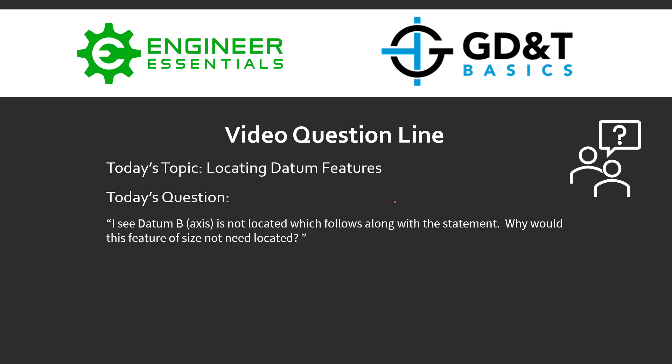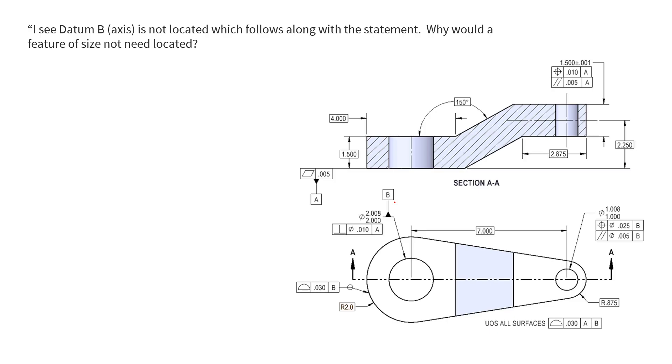Hey everybody, Jason here with the video question line with GD&T Basics. Today we're covering the topic of locating datum features. Today's question from a student is: I see datum B, which is an axis, is not located — which follows along with the question: why would this feature of size not need to be located? Let's focus on this feature control frame right here — it's controlling the perpendicularity of this feature of size, which is a hole. We can see in the cross-section we're controlling the perpendicularity of this axis with respect to datum plane A, that bottom surface.